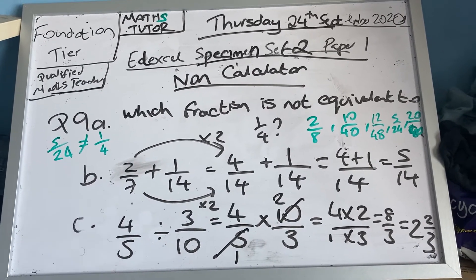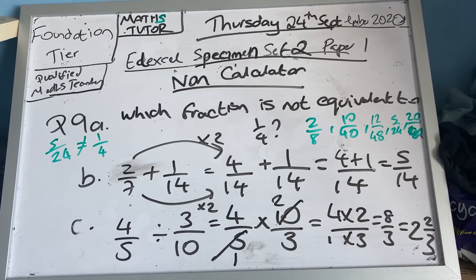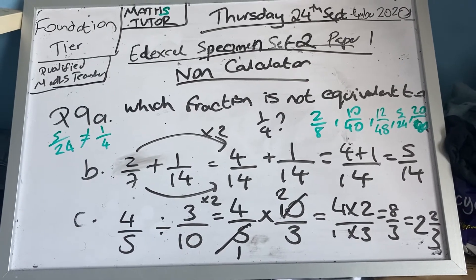Part c: work out four-fifths divided by three-tenths, and the question says give your answer as a mixed number in its simplest form.